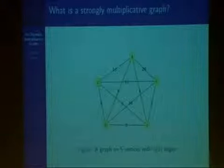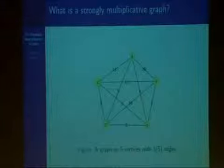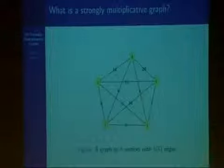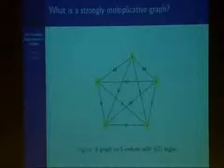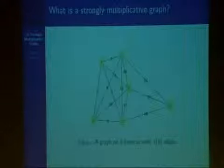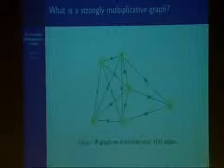Our problem essentially deals with the maximal number of edges that can be constructed on a strongly multiplicative graph with n vertices such that no two edges have the same edge label. In the case where n equals 5, all possible edges can be constructed. So lambda of 5, which denotes the maximal number of edges on a strongly multiplicative graph with five vertices, is 5 choose 2, or 10. But if we look at the example for 6, we notice that some edges cannot be constructed, since we already have edge labels of 6 and 12. So in this case, lambda of 6 is 13.